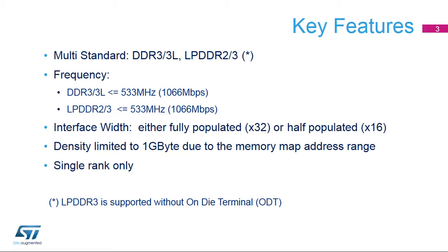The 32-bit interface width can be either fully populated (32-bit) or half-populated (16-bit). Note the device may also be packaged with the 16-bit DDR interface only. Density is limited to 1 GB due to the memory map address range. DDRSS supports single rank only.